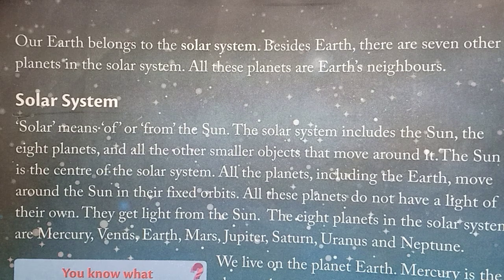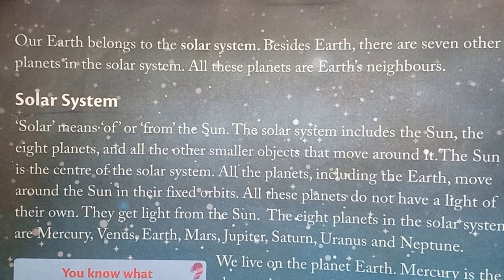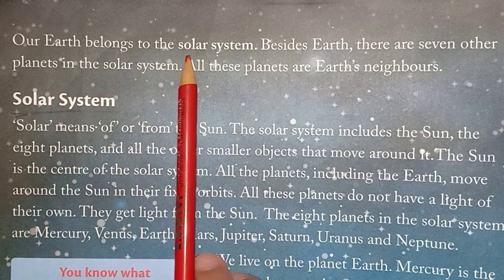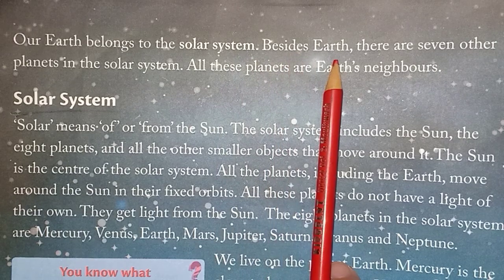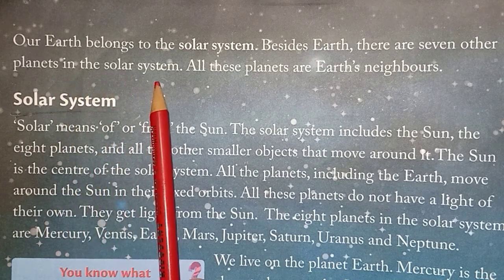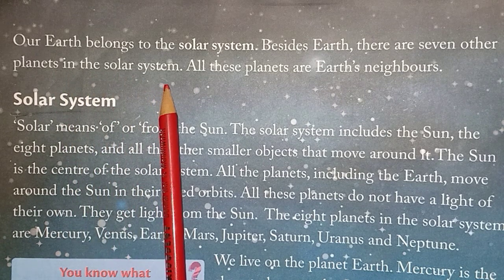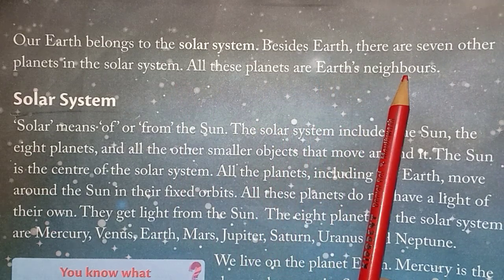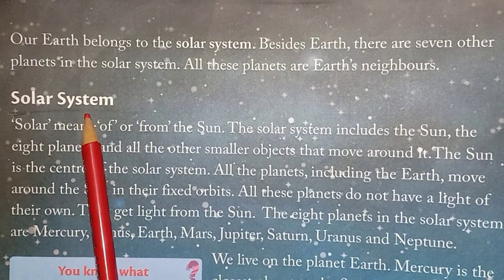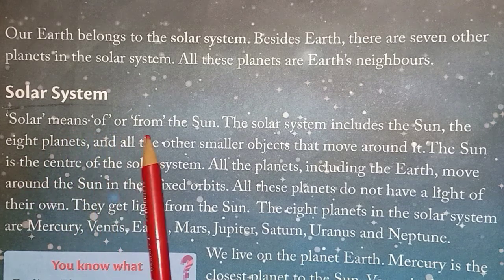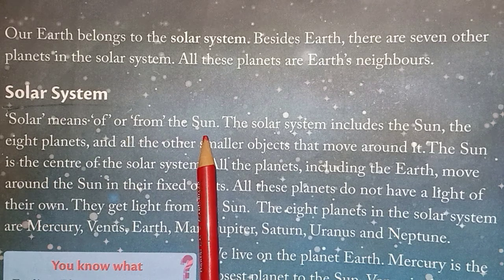All these planets are our Earth's neighbors. Now let's study the solar system. Our Earth belongs to the solar system. Besides Earth, there are seven other planets in the solar system, all revolving around the Sun. The word 'solar' means 'of or from the Sun.'